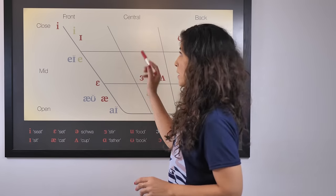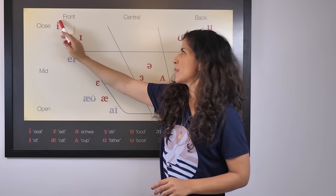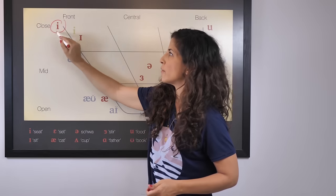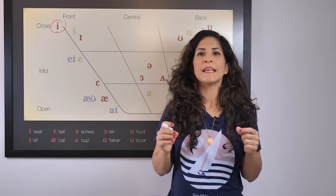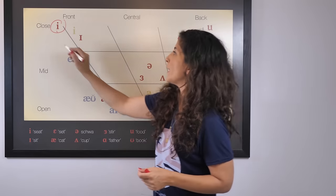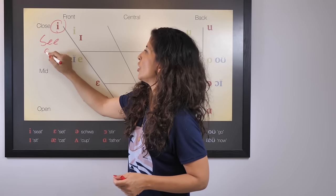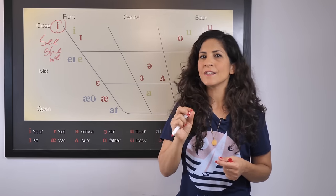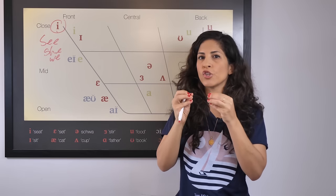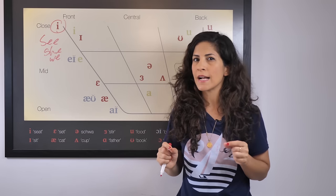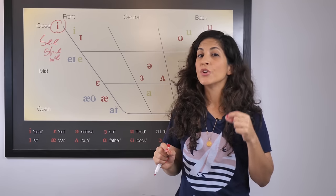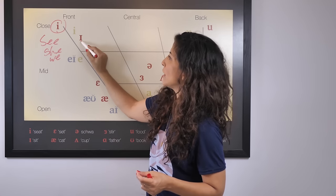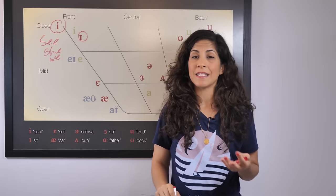Let's begin with front vowels. As we go to the left part of the chart and the highest point, we see the E sound — the E as in 'see,' 'we,' and 'she.' It's a high vowel. High because the tongue is high. It's a tense vowel because all the articulation organs are really tense. The lips pull to the sides a bit. E. We. She.